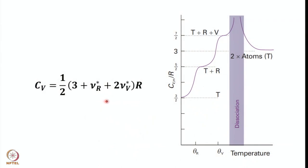Based on that discussion, we came up with the expression: the constant volume molar heat capacity is (1/2)(3 + ν_R* + 2ν_V*) R. Here ν_R* equals 2 when the rotor is linear, equals 3 when the rotor is nonlinear, and ν_V* equals 1 for each normal mode of vibration.